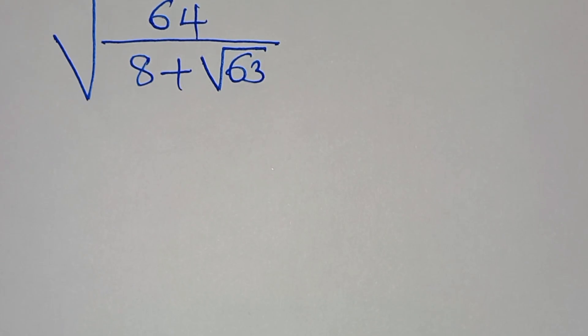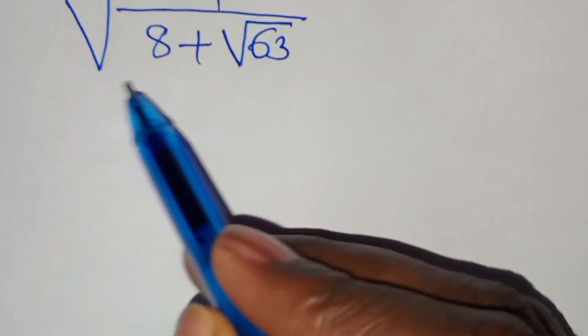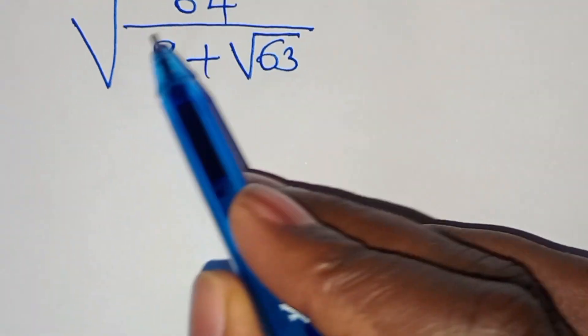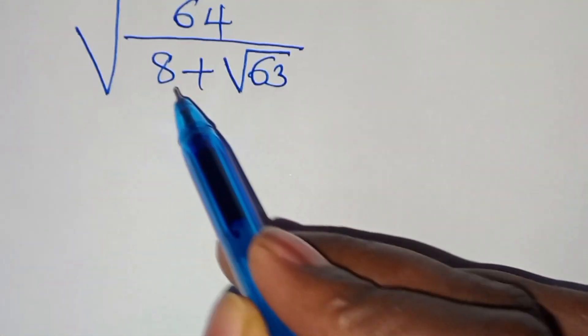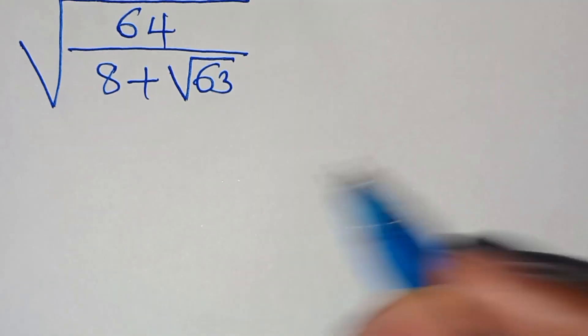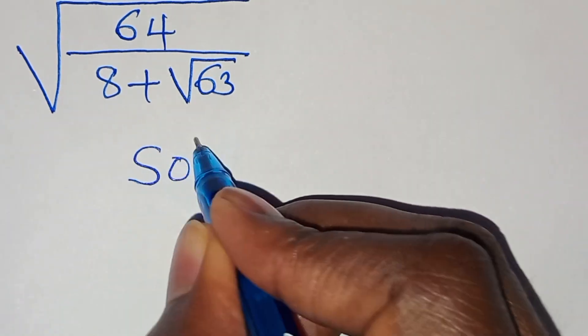Hello everyone, you're welcome to solve this nice radical square root math problem, which is the square root of 64 divided by 8 plus square root of 63. Now let's provide a solution.